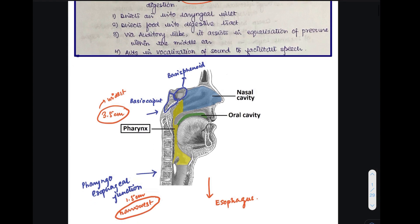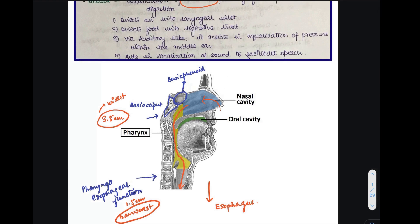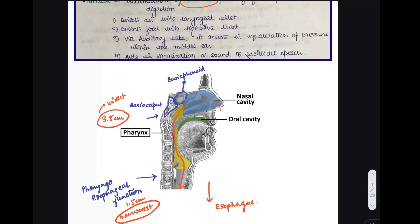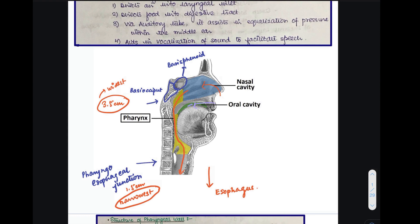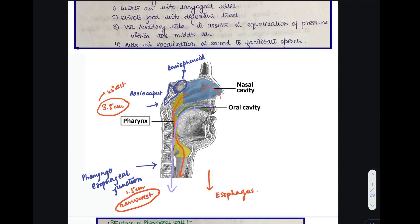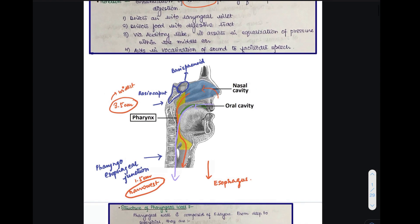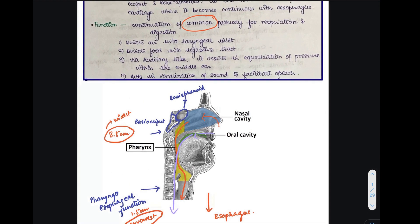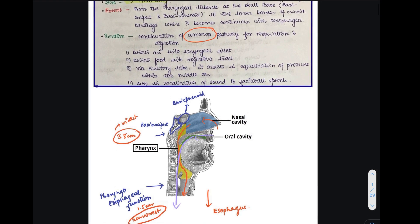First, for respiration, air enters through the nasal cavity, continues into the nasopharynx, comes down through the laryngeal inlet, enters the larynx, and goes further into the trachea and bronchi — the pharynx forms part of this pathway. Second, for the digestive tract, which begins in the oral cavity, food goes through the oropharynx and continues down through the rest of the pharynx into the esophagus. Third, via the auditory tube — also known as the Eustachian tube or pharyngotympanic tube — it helps in equalization of pressure within the middle ear. Fourth, it aids in vocalization to facilitate speech.